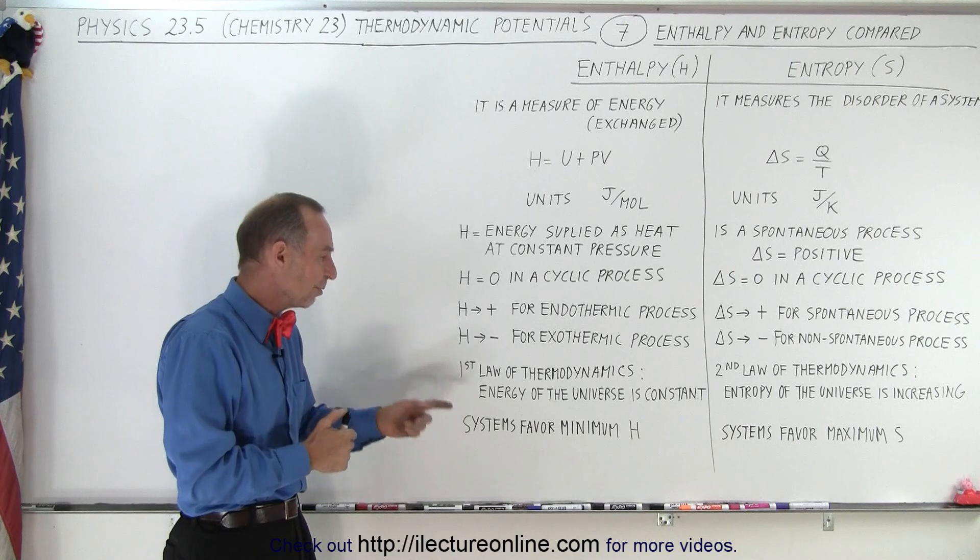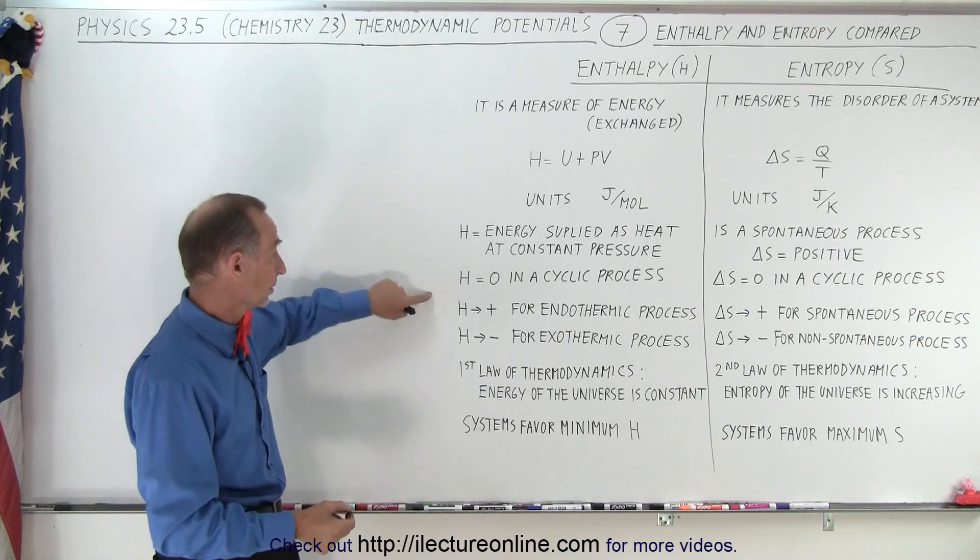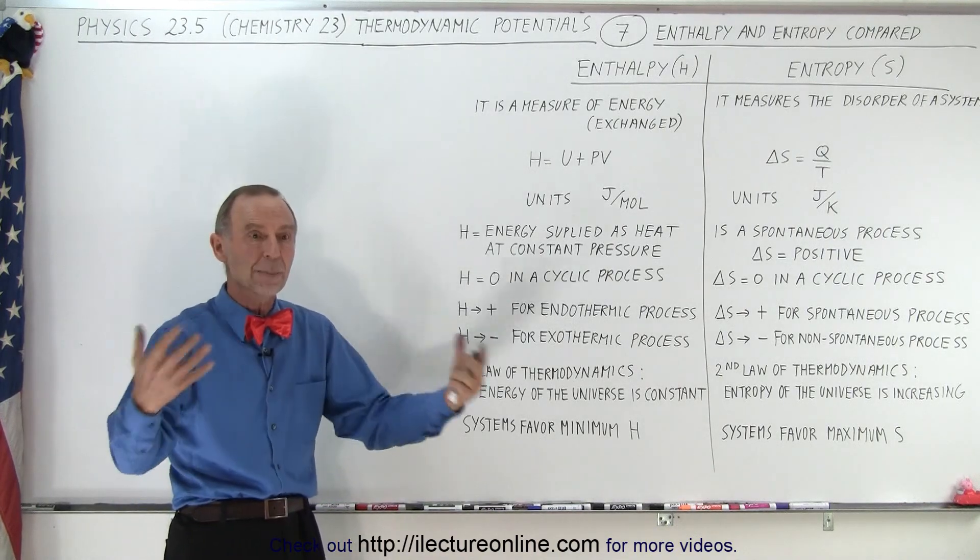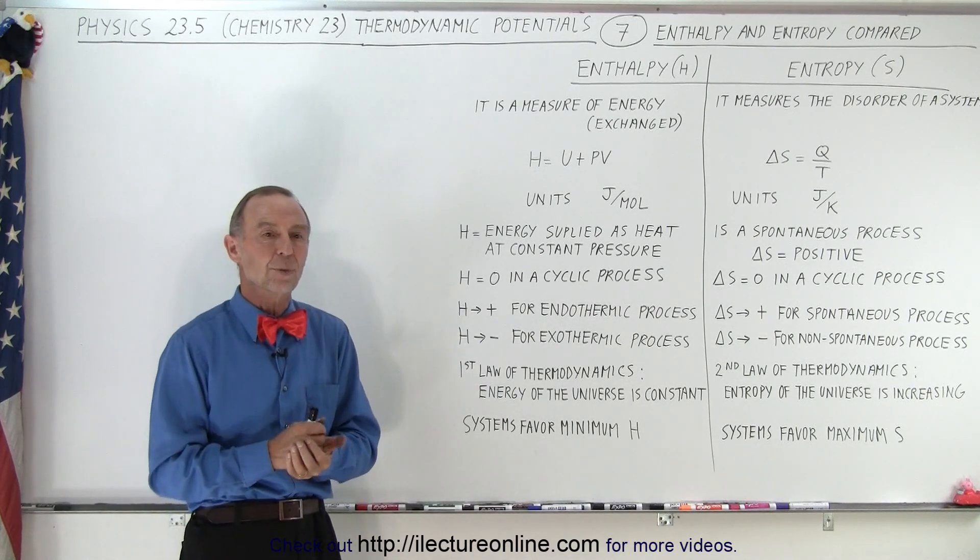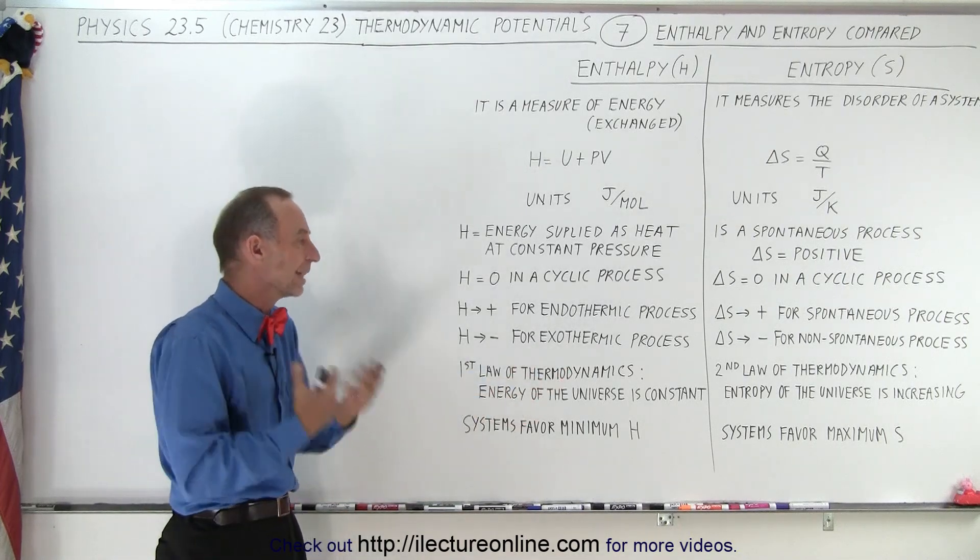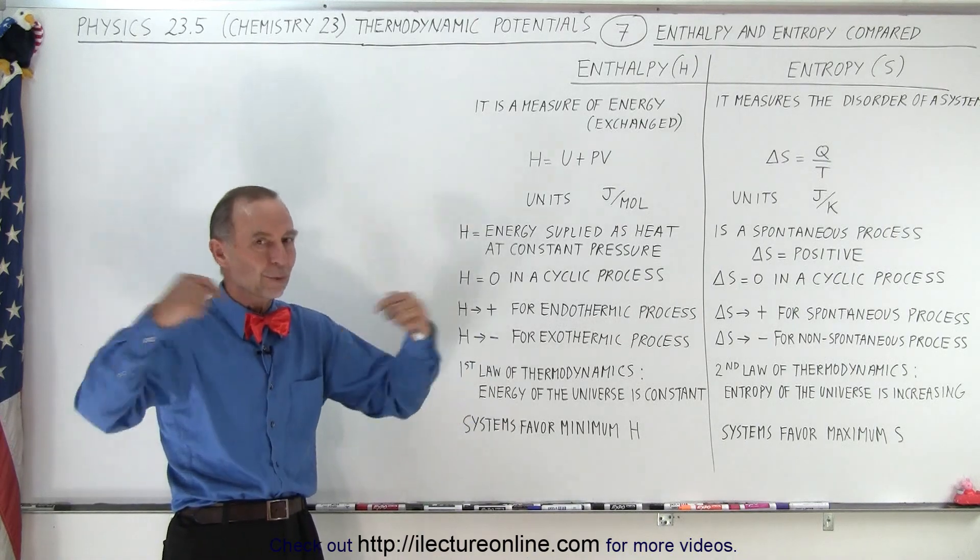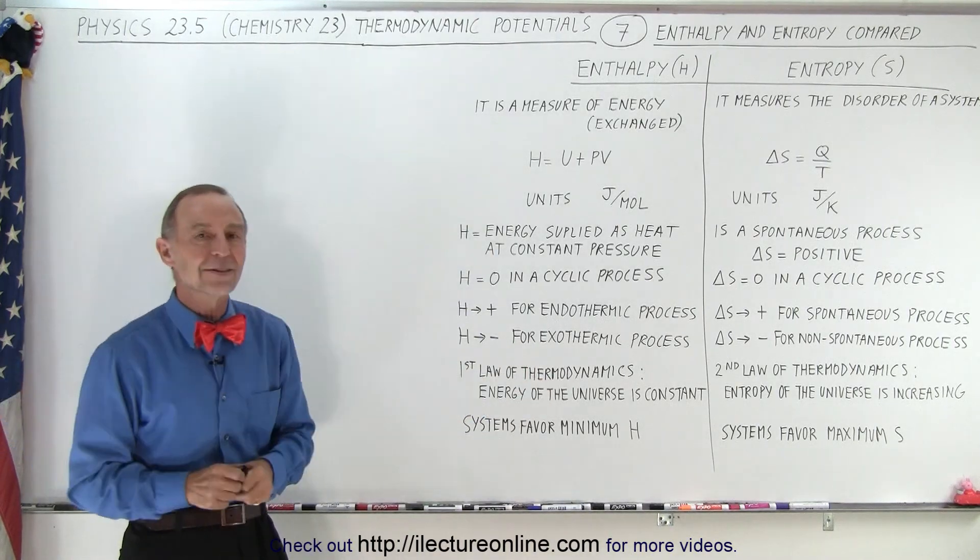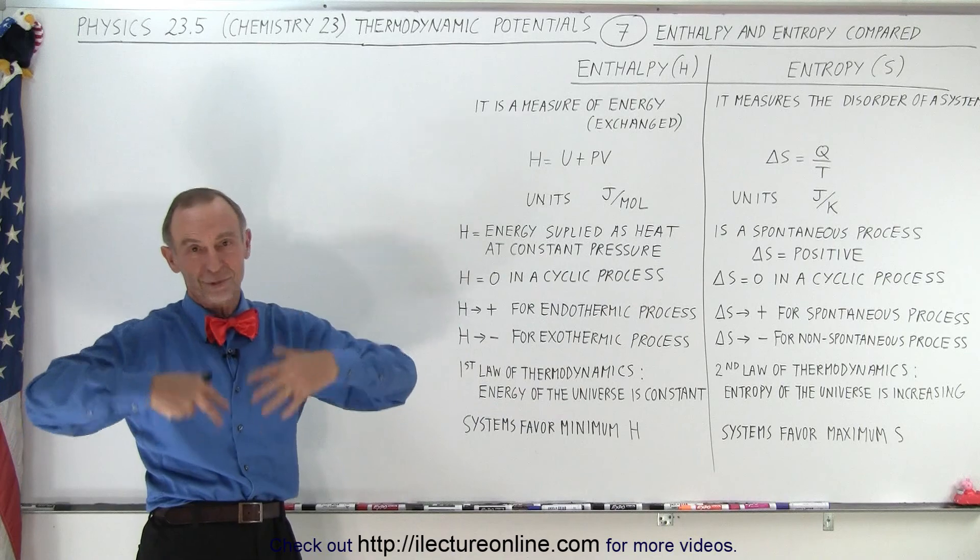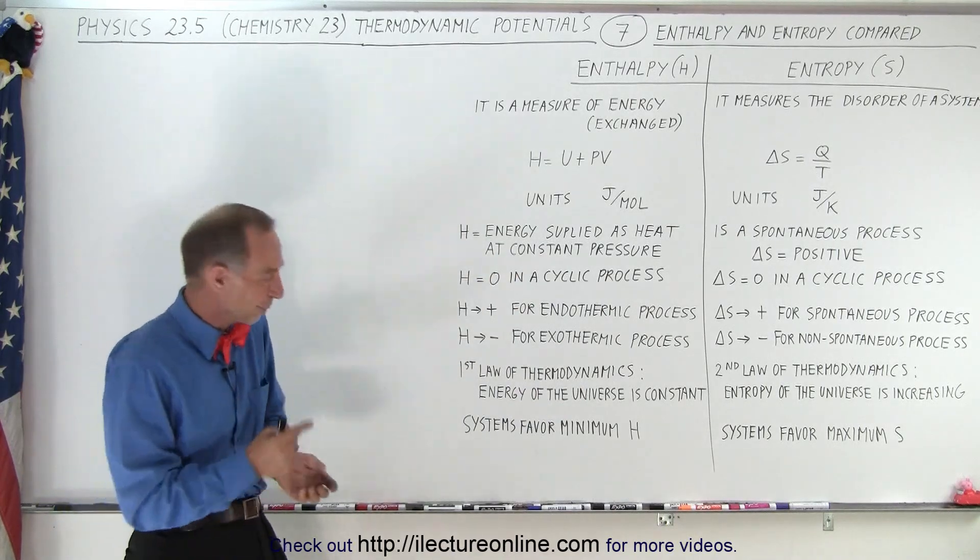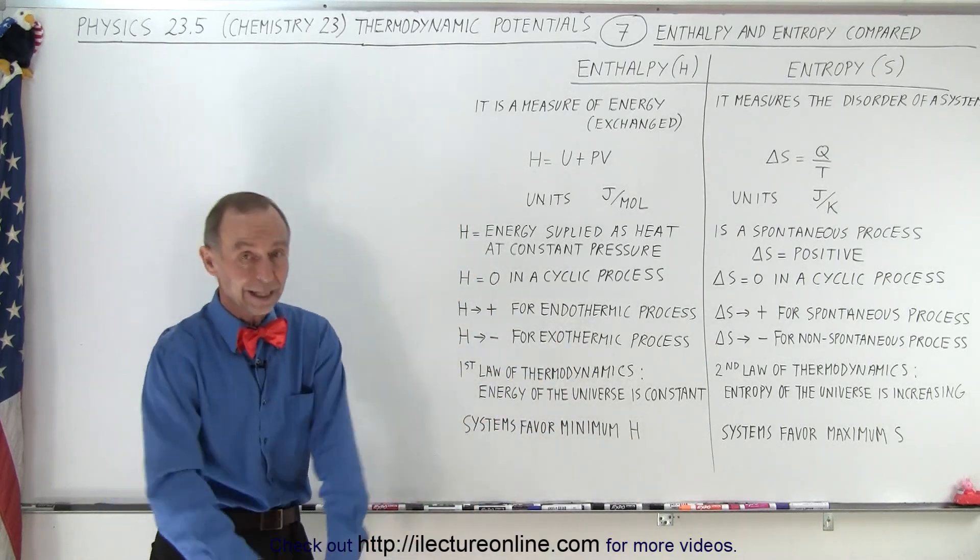And finally, systems favor a minimum H. Now remember that when H is positive, we have an endothermic process. That means heat is absorbed, and so that is the least favorable situation. Heat being given off is the most likely way in which something will happen. In other words, if a process only happens when it absorbs heat and you must get it from somewhere, that's a less likely scenario to happen. But when a system readily gives off energy, go ahead, have the reaction. Just give off the energy, that's a more likely scenario. So therefore we can say that systems favor a minimum H. H should be as little as possible, preferably a negative number.